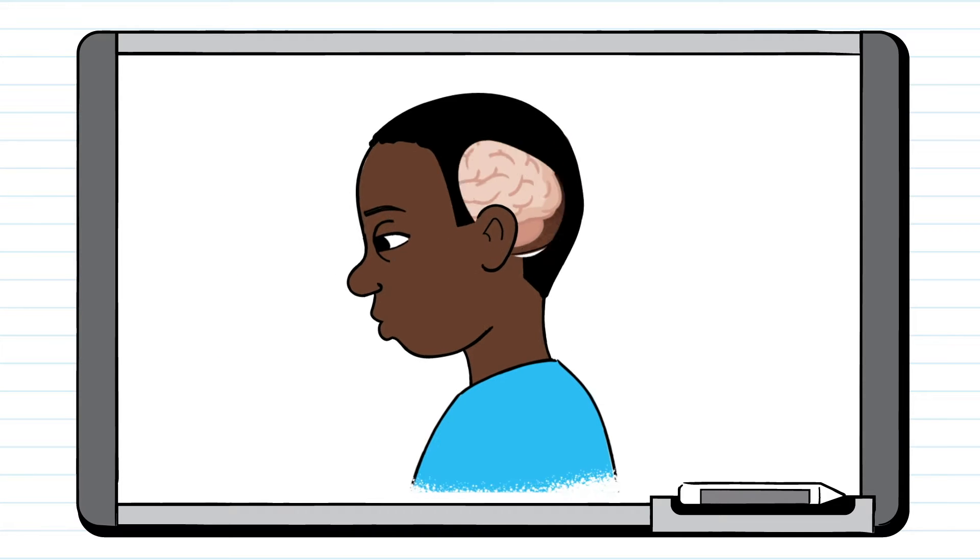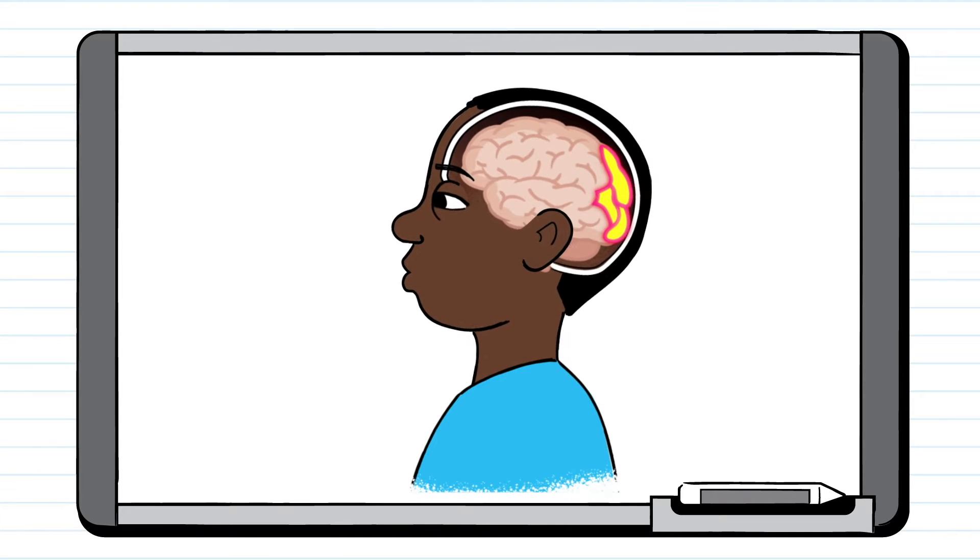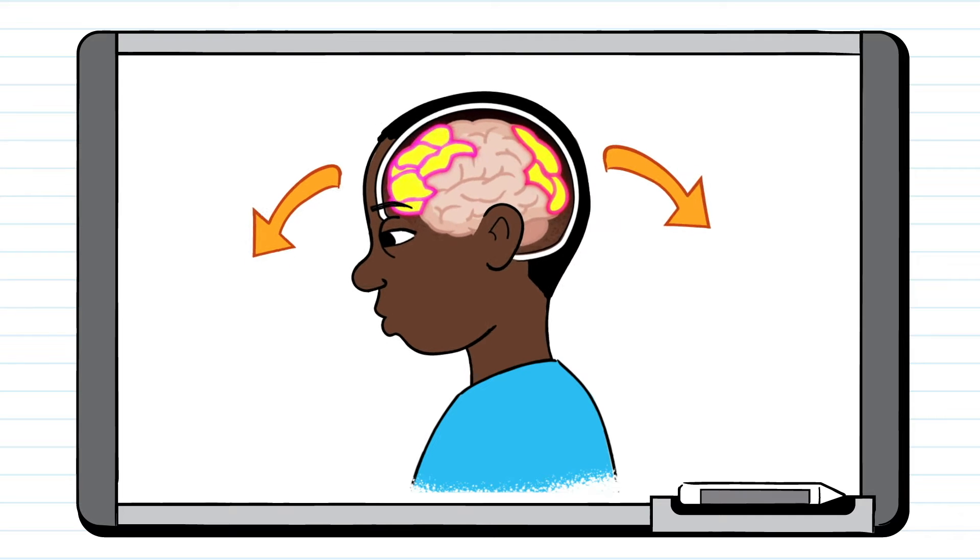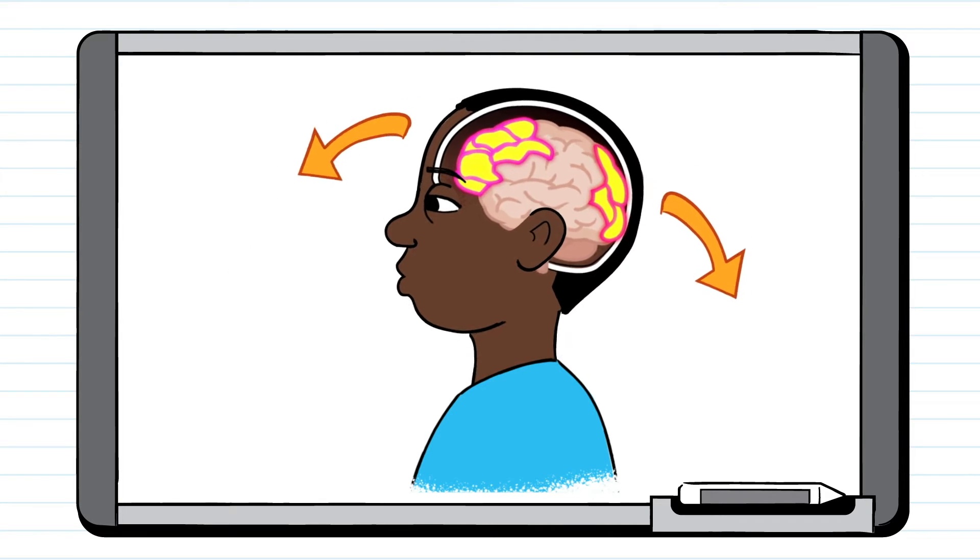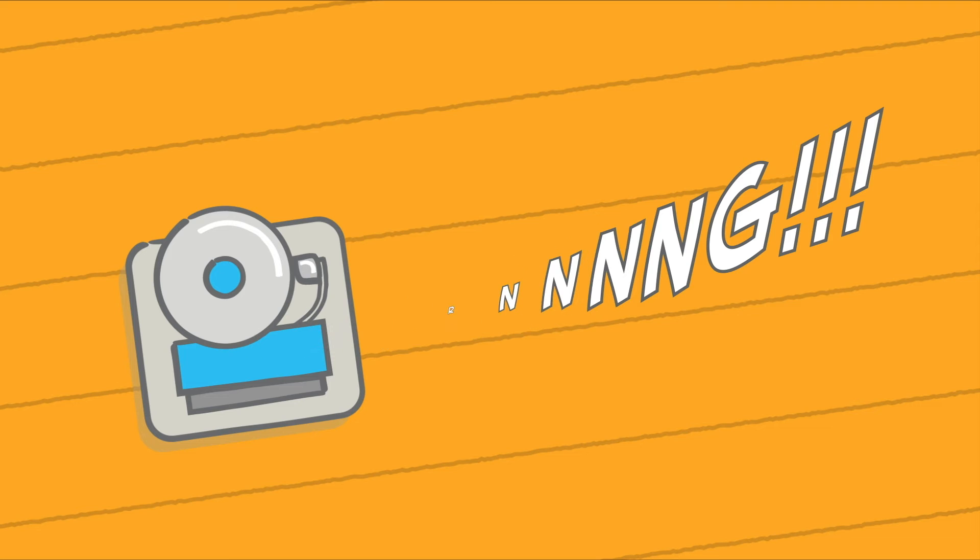Concussions can also be the result of a fall or blow to the body that causes the head and brain to move rapidly back and forth. The brain of an illustrated boy appears on screen. The back and the front of the brain light up as his head rocks from back to front.